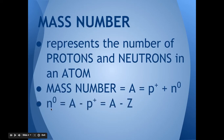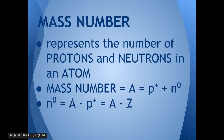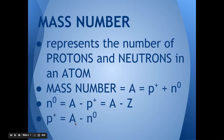You can use this to figure out the number of neutrons by taking the mass number A and subtracting the number of protons. You can also substitute Z in for the number of protons, since those two things are equal. So you can find neutrons if you know the mass number and the number of protons. Also, the number of protons can be figured out by taking the mass number and subtracting off the neutrons.